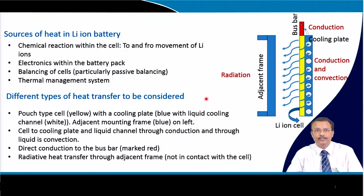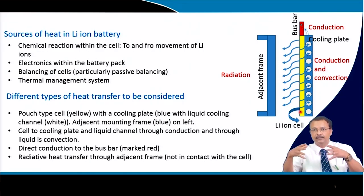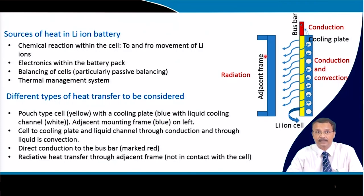All different types of heat transfer may be considered. Here is one schematic: the yellow part is a pouch cell directly connected to a cooling plate — the blue one — which has channels marked in white. This cooling plate connects with the battery and you have the bus bar to connect one pouch cell with another, and then you have a frame to hold all the batteries in place inside the module. So with this arrangement you have cell-to-cooling-plate heat transfer by conduction and heat removal through liquid channels by convection.